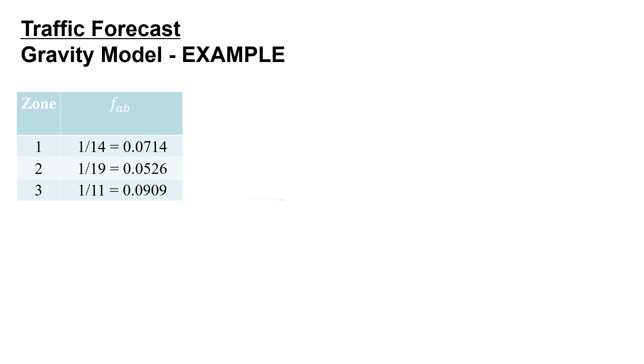We're going to find our friction factor, our travel cost. This is one over the travel time from each zone to the development. We have the number of trips that each of the zones generates during that AM peak hour and then that socioeconomic factor that we're pulling over.